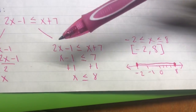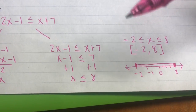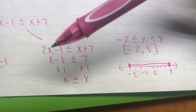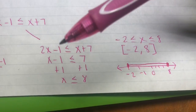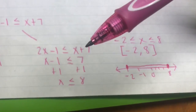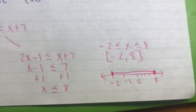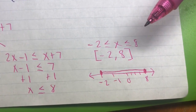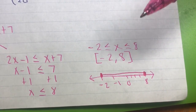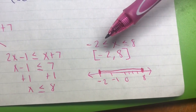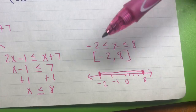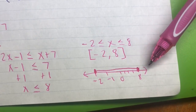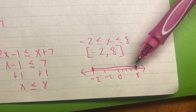For the second part, 2x − 1 ≤ x + 7: we subtract x from both sides to get x − 1 ≤ 7, then add 1 to get x ≤ 8. Combining both results, we get negative 2 ≤ x ≤ 8, giving us the final answer of [−2, 8] — a closed interval with two brackets. On the number line, this is shown with two closed circles.